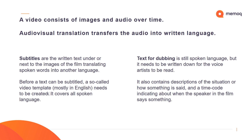Some general remarks about different forms of AV translations. A video consists of images and audio over time. A subtitle translates the audio into written language, but there are different ways audiovisual translation can be treated. Subtitles are the written text under or next to the images of the film, translating spoken words into another language. Before a text can be subtitled, a so-called video template — mostly in English — needs to be created. It covers all spoken language.